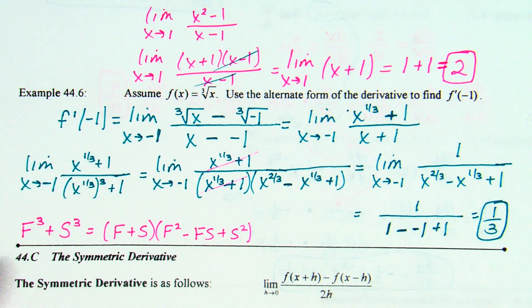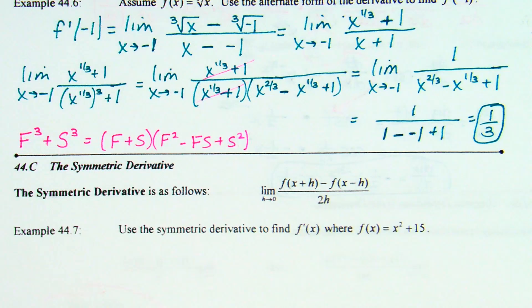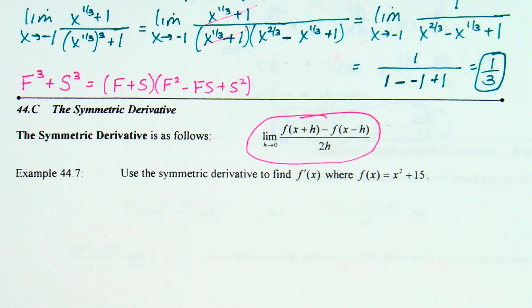One last example. We have one last definition of the derivative — this is called the symmetric derivative. It's the limit as h approaches zero of f(x plus h) minus f(x minus h), all over 2h.